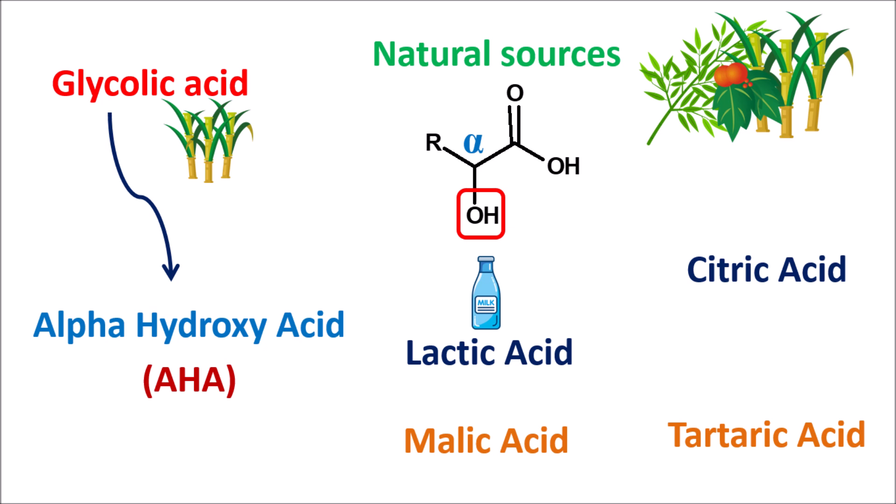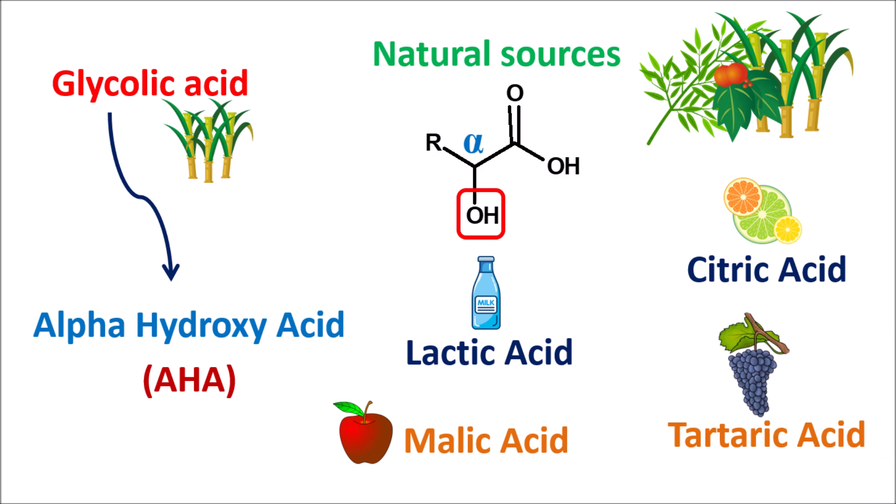Citric acid is obtained from citrus fruits, malic acid is obtained from apples, and tartaric acid is present in grapes. In this way, all these alpha hydroxy acids are derived from natural sources.